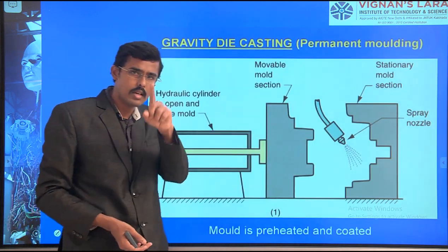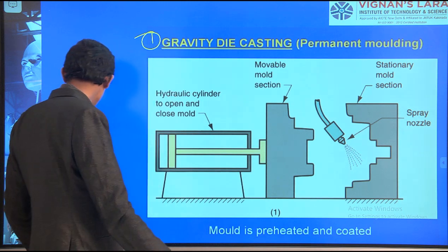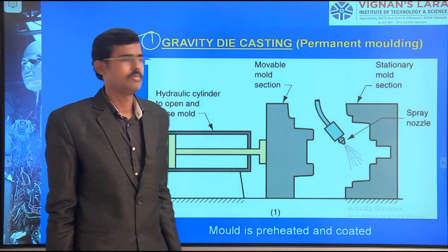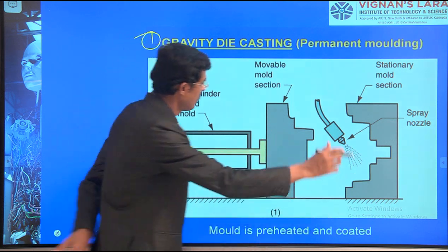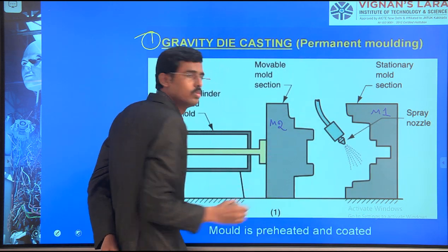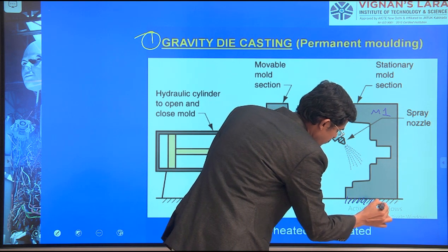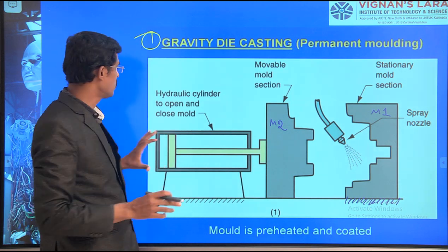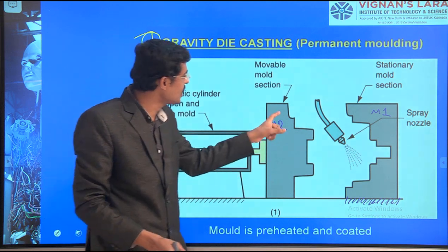Now we look at the setup of gravity die casting. There are two dies used. This is metal die one, and this is metal die two. One is fixed and the other is movable using cylinder-piston arrangements. The design cavity is in between these two dies.